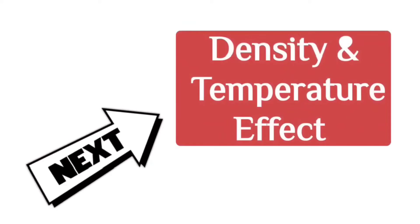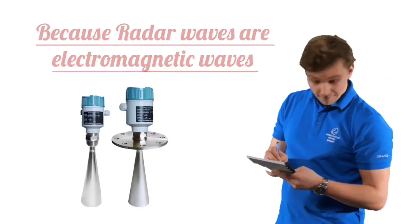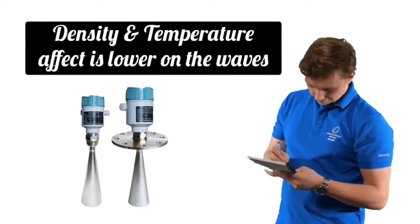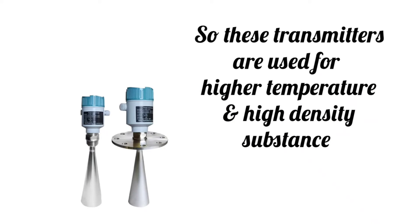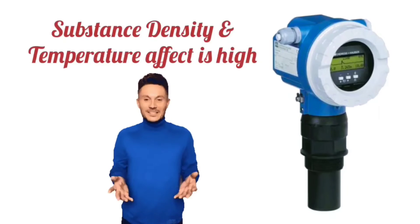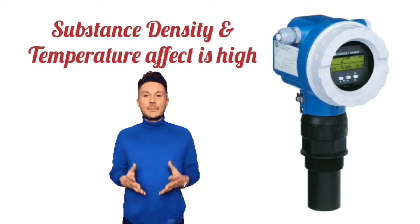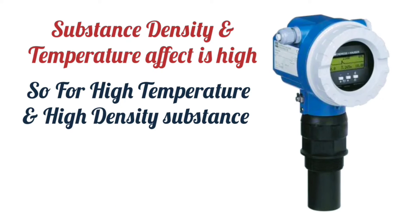Next is the effect of density and temperature. Radar waves are electromagnetic in nature, so the density and temperature of the substance have little effect on waves. So radar level transmitters can also be used for high temperature and high density substances. While in ultrasonic transmitters, the density and temperature of the material have a greater effect on the waves. Therefore, ultrasonic level transmitters are less used in the level measurement of high temperature and high density substances.